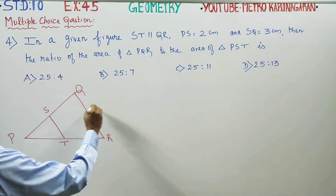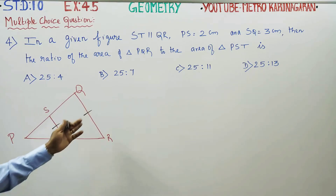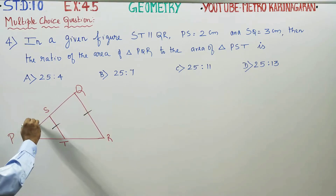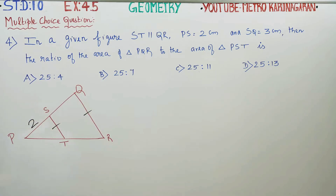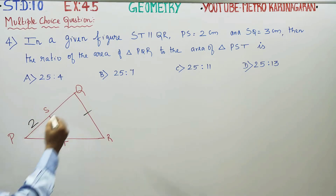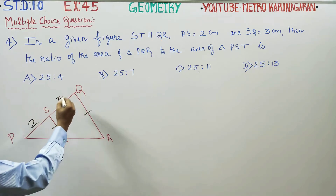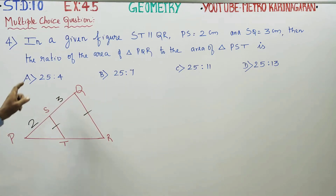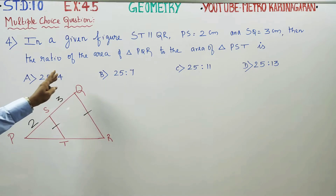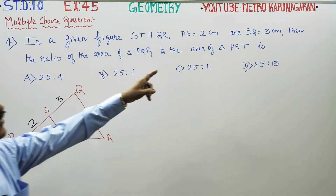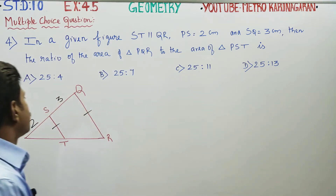In the side, these two sides are parallel. PS has a measurement of 2, SQ has a measurement of 1.3, and QT or TR has a measurement of 2. Find the ratio of the area of triangle PQR to the area of triangle PST.